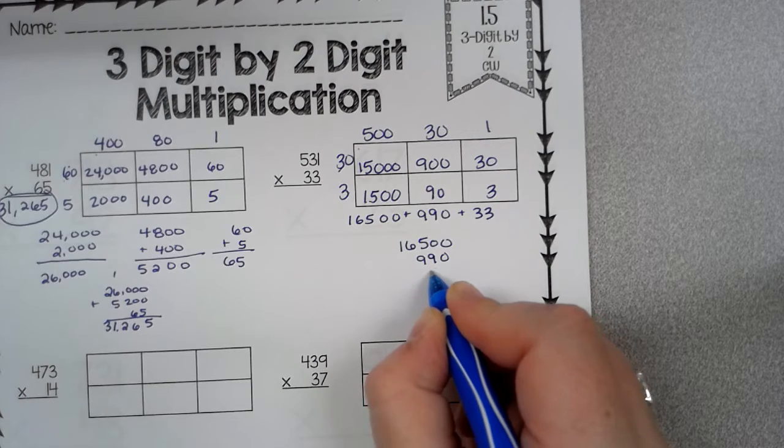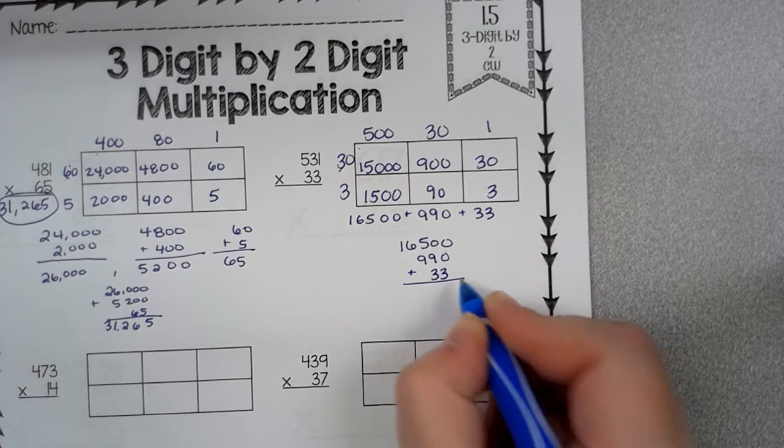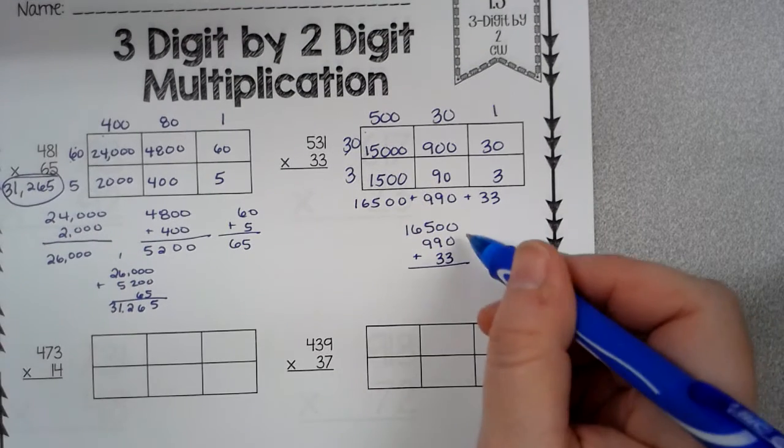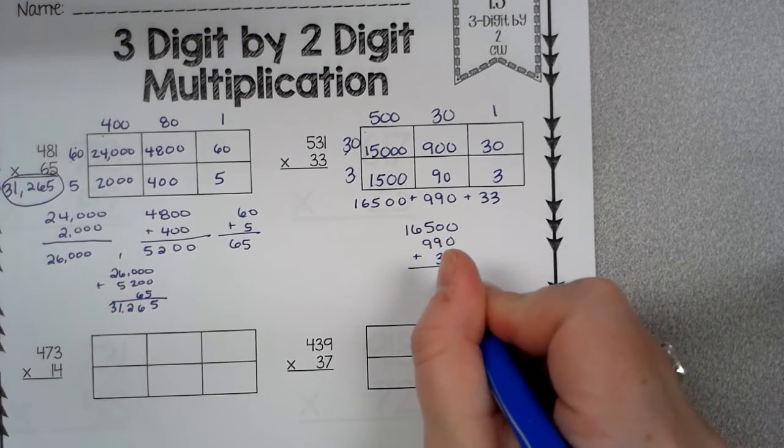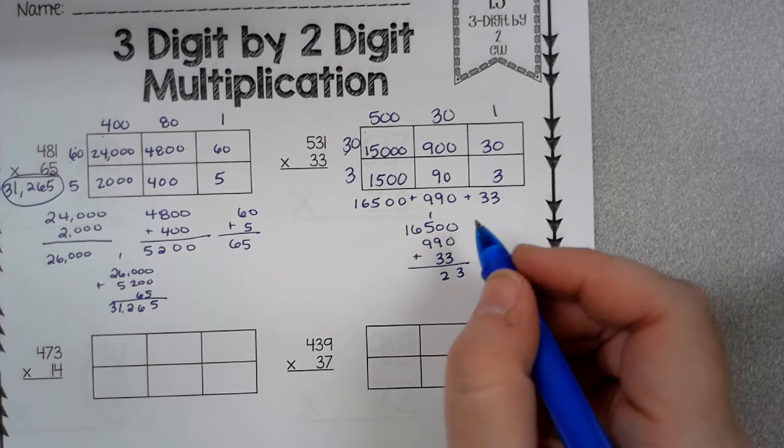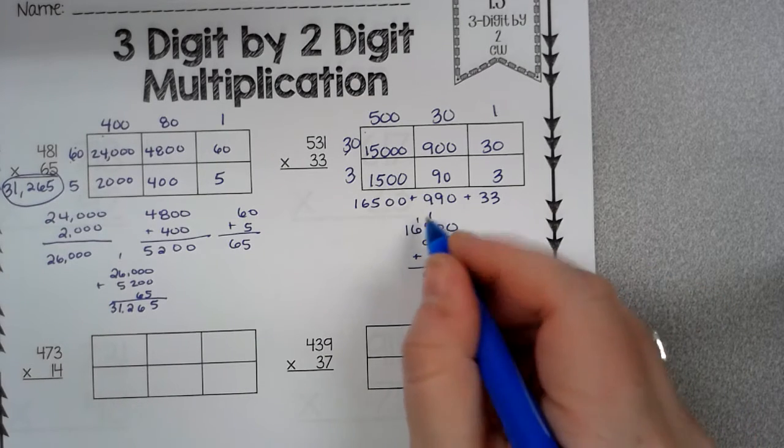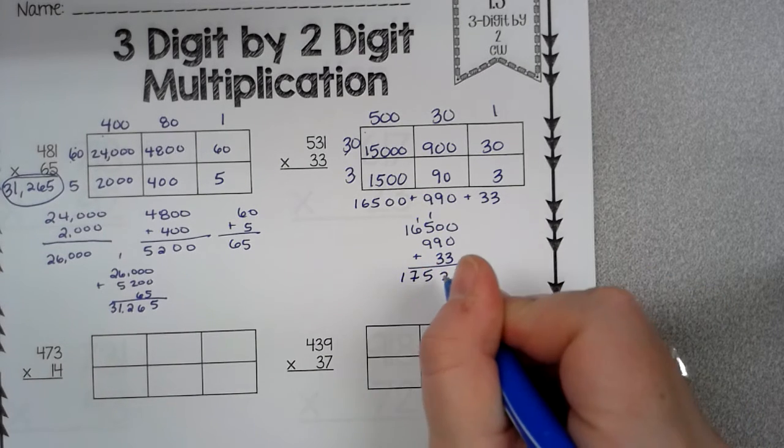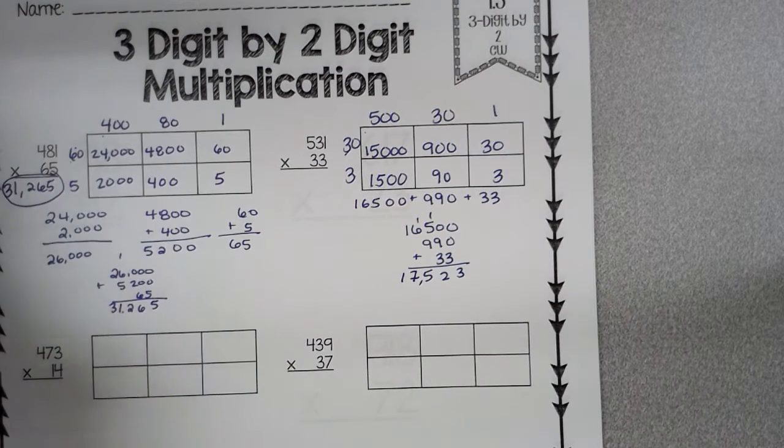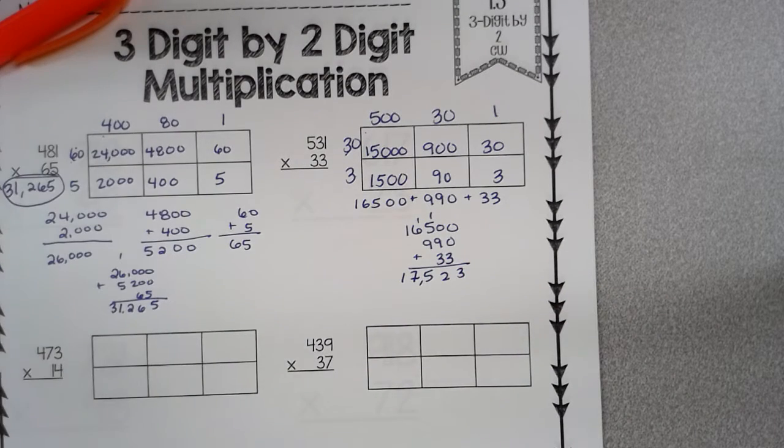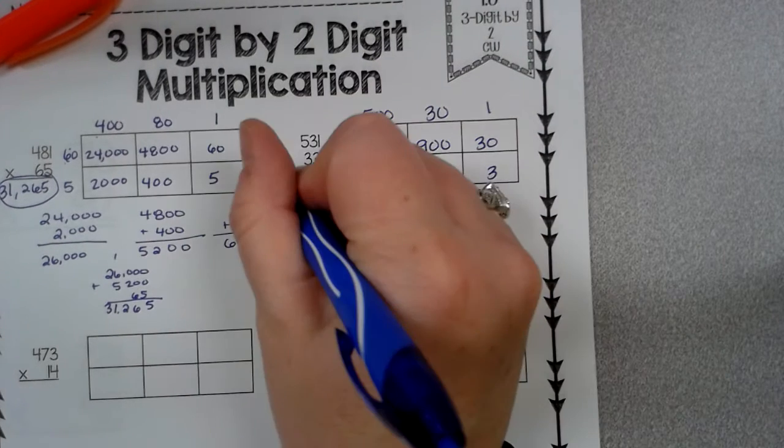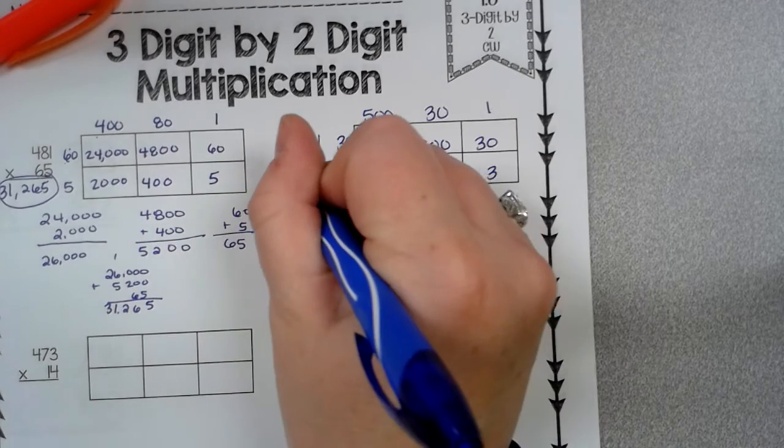I second guess myself a lot. Okay. So 3, 12, 10, 15, 7, 1. 17,523. Just want to make sure I got that right. Okay. So 17,523.